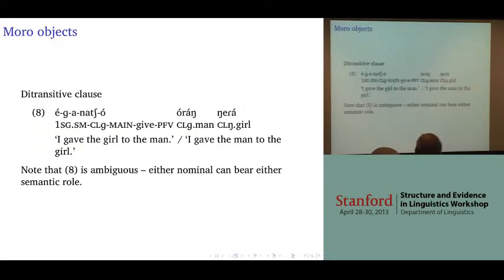In example eight, we see a ditransitive clause: 'I gave the girl to the man' or 'I gave the man to the girl.' Notice this is ambiguous — either nominal can bear either of the semantic roles.